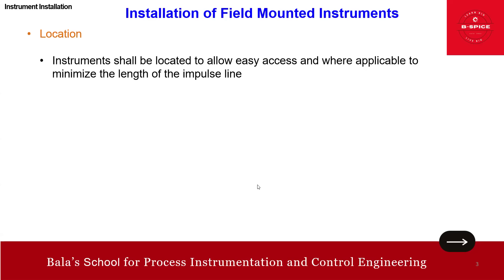As part of field instrument installation, the first consideration is location — we need to determine the location. The instrument shall be located to allow easy access and, where applicable, to minimize the length of the impulse line. When we install this instrument we should ensure easy access and try to install in such a way as to reduce the impulse line — say 6 meters.